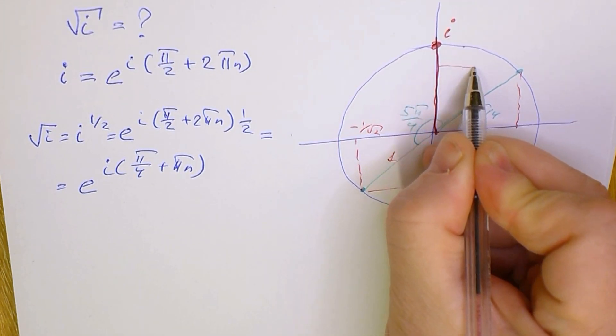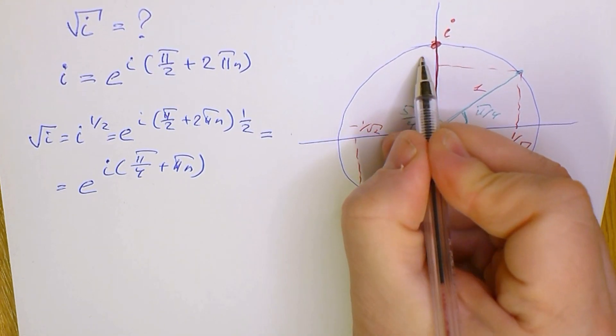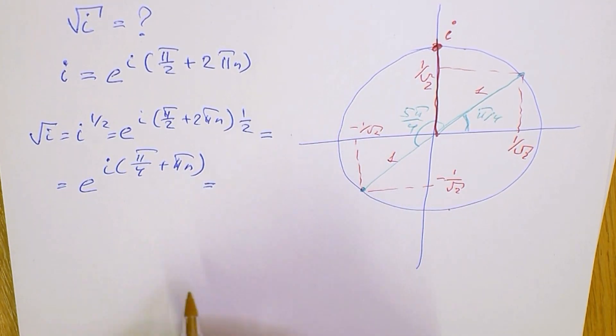And for the first point, it will be length 1 again, and the point will be 1 divided by square root of 2 and 1 divided by square root of 2. That's it.